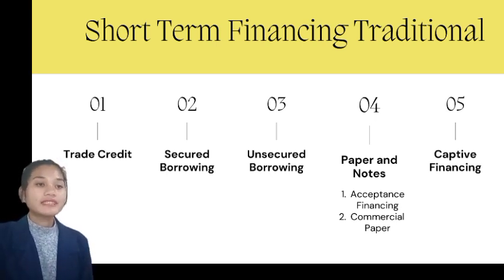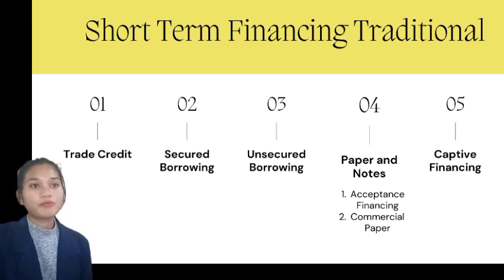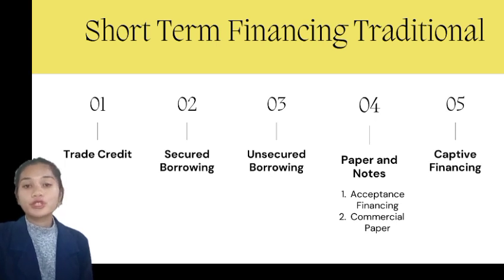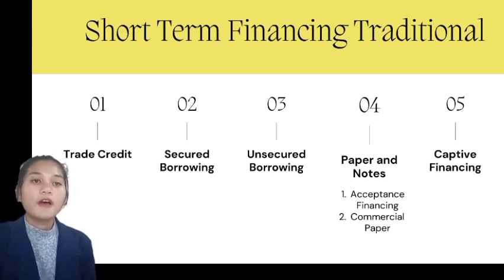The second is commercial papers — promissory notes that have a maximum duration of nine months and are not secured. A corporation may sell directly to institutional investors at a discount, either directly or via a commercial dealer. They are typically issued by big, well-run businesses and are neither accepted nor countersigned by anyone. The last is captive financing. It may be a good idea for businesses that offer goods in exchange for lease, rental, or installment payment to consider establishing their own financing companies.